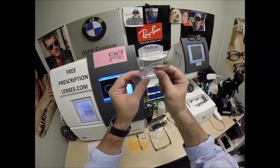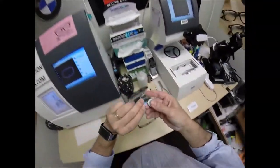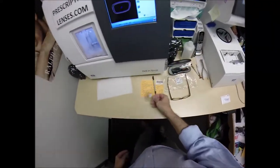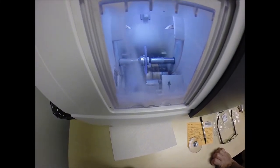The polycarbonate is 40% thinner and lighter than regular plastic. They're virtually unbreakable. These are high impact ballistics grade lenses. The same lens material that our soldiers wear overseas in combat zones to protect their eyes from shrapnel and from flying debris.